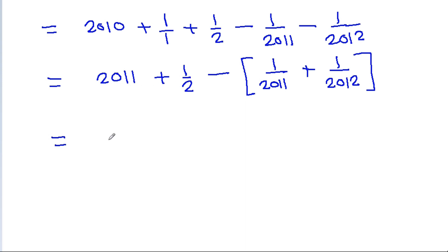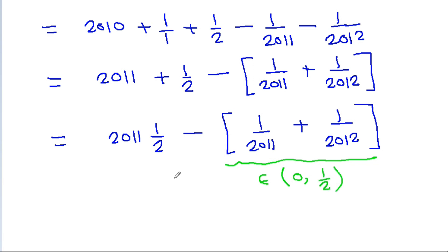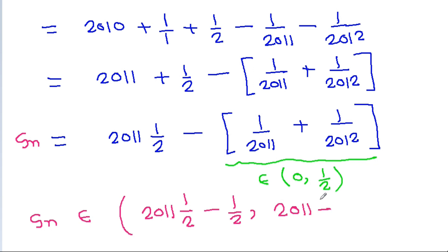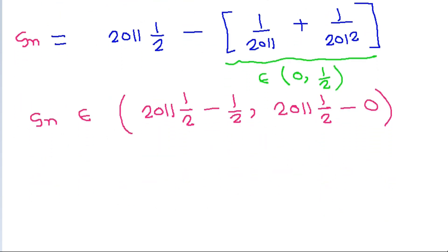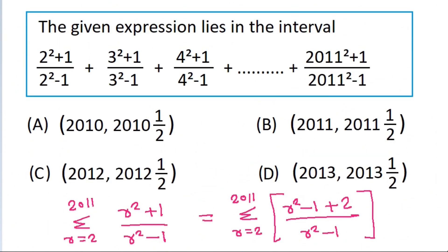The result is 2011 plus 1/2 minus 1/2011 minus 1/2012. This expression is greater than 0 and less than 1/2, so Sn belongs to the interval (2011, 2011+1/2). The correct option is option B.